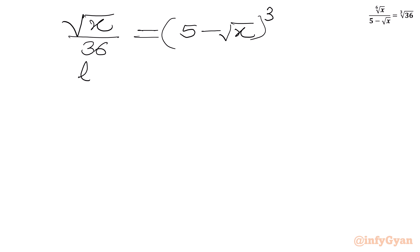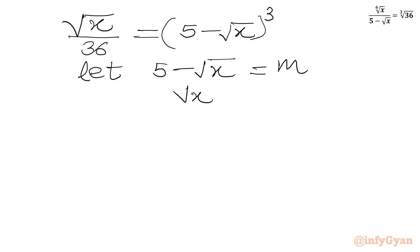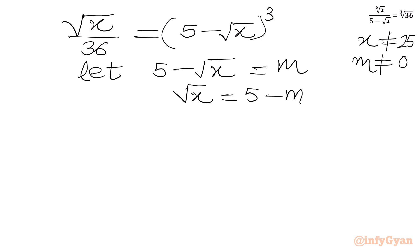Now we will consider a substitution. Let 5 minus square root x equal to m. So square root x equals 5 minus m. Since x cannot equal 25, m cannot equal 0. Our equation becomes (5 minus m) over 36 equal to m cubed.